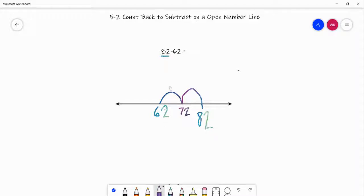And that's our answer. So we jump back 10 right here, and 10 right here, and 10 plus 10 equals 20.